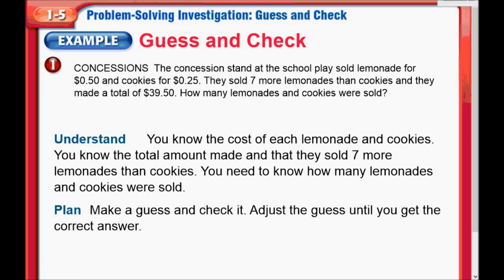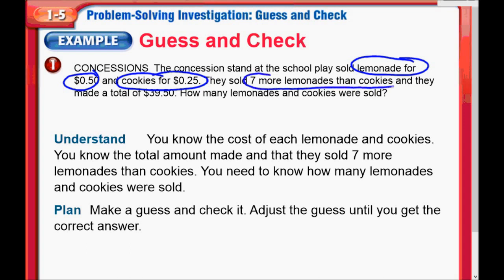The concession stand at the school place sold lemonade for 50 cents and cookies for 25 cents. They sold seven more lemonades than cookies and they made a total of $39.50. How many lemonades and cookies were sold? You want to pull out those important numbers and facts — lemonade was 50 cents, cookies were 25 cents, they sold seven more lemonades than cookies, and there's a total of $39.50.